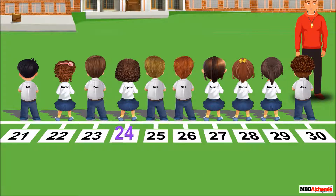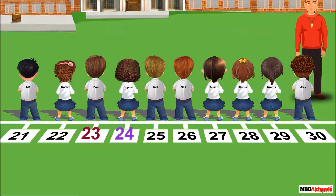Sophie is standing at number 24. Zoe is standing before Sophie and is at number 23. It means 23 comes before 24.